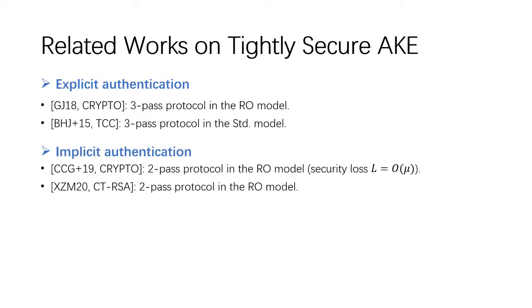Up to now, there are several works considering tight security of AKE. Bader et al. proposed the first tightly secure three-pass AKE scheme in the standard model. Later, Gjøsteen and Jager proposed another three-pass scheme with tight security in the random oracle model. Both these schemes consider explicit authentication. As for implicit authentication, there are two works for two-pass protocols in the random oracle model. Though these schemes can be extended to provide explicit authentication by the key confirmation method, an extra pass is needed.